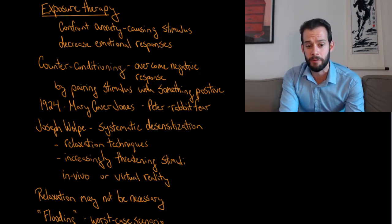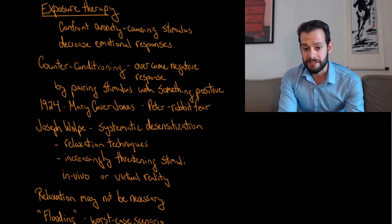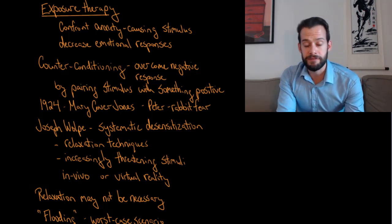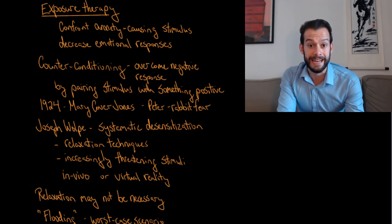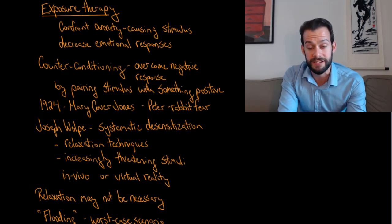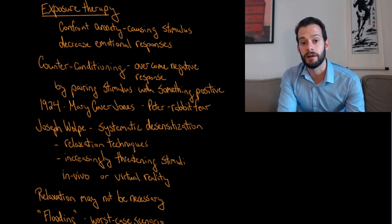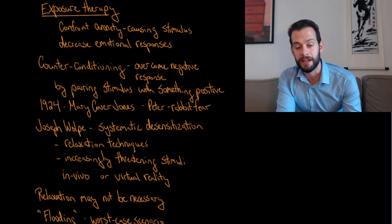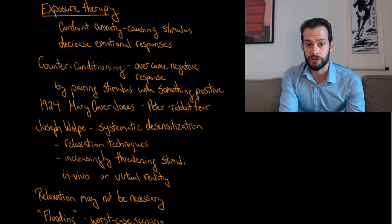What I've described is an example of in vivo exposure — actually in real life, with an actual snake present. But in some cases we can also do this through virtual reality, especially for phobias related to certain situations, such as a fear of riding in an airplane, getting into an elevator, or in the case of agoraphobia, leaving the house or going to a subway station or shopping mall. We can mimic these situations in virtual reality until the person has learned to reduce their emotional response, and then gradually help them do this in real life.